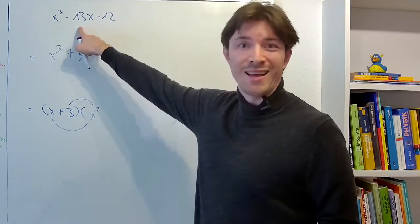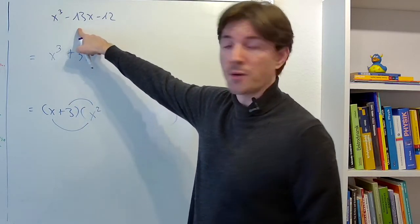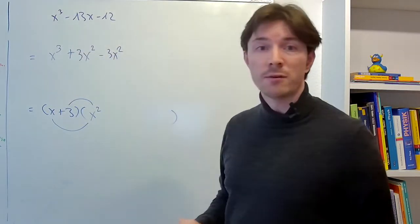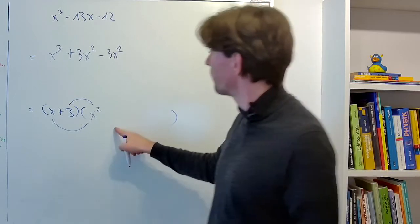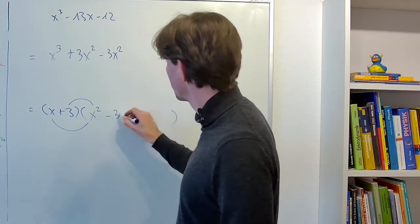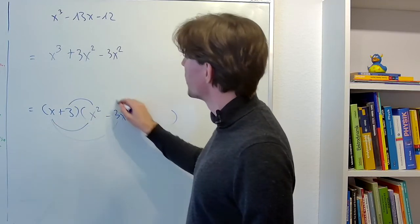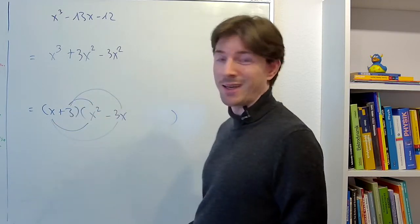But we don't want any x squared part in here so we need to compensate with the negative 3x squared. The only way to get negative 3x squared from the expanded form is by having negative 3x the next term. That gives us negative 3x squared but it also gives us negative 9x.